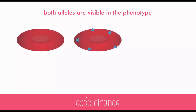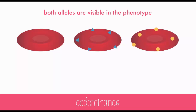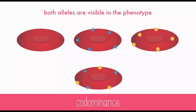Type A has A antigens, type B has B antigens, and then there's a fourth type called AB, which has both the A and B antigens. This is codominance.